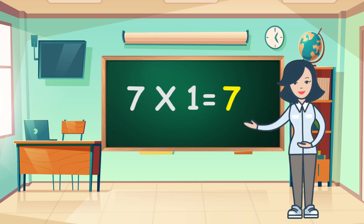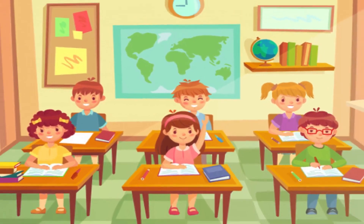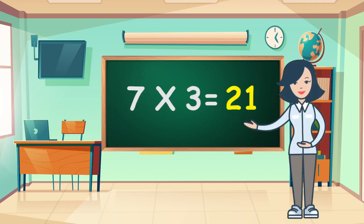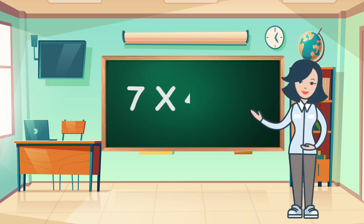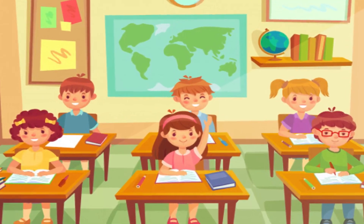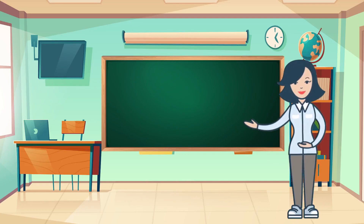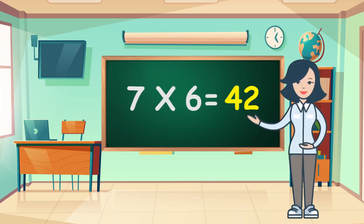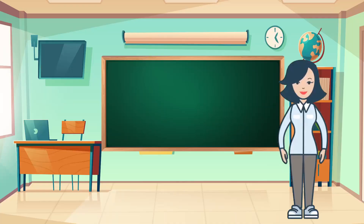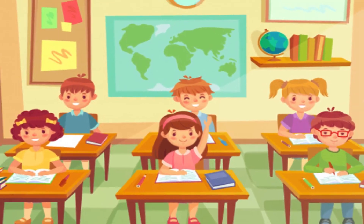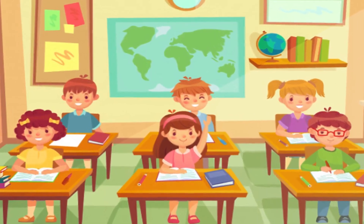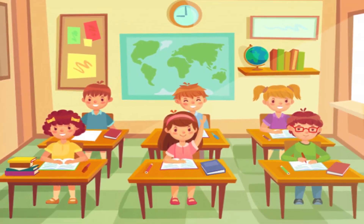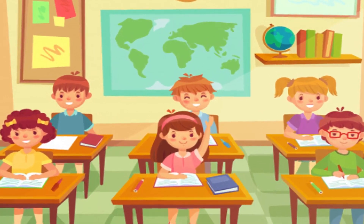Seven ones are seven. Seven ones are seven. Seven twos are fourteen. Seven twos are fourteen. Seven threes are twenty-one. Seven threes are twenty-one. Seven fours are twenty-eight. Seven fours are twenty-eight. Seven fives are thirty-five. Seven fives are thirty-five. Seven sixes are forty-two. Seven sixes are forty-two. Seven sevens are forty-nine. Seven sevens are forty-nine. Seven eights are fifty-six. Seven eights are fifty-six. Seven nines are sixty-three. Seven tens are seventy.